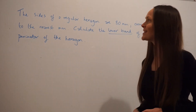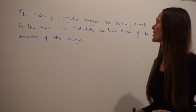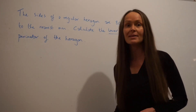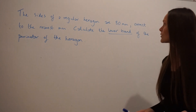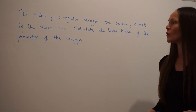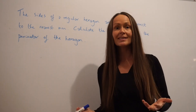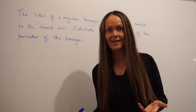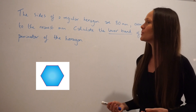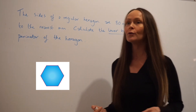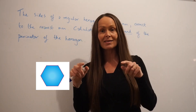In this question it says that the size of a regular hexagon are 80 millimetres correct to the nearest millimetre. Calculate the lower bound of the perimeter of the hexagon. A hexagon is a six-sided shape and a regular hexagon just means that all of the lengths are equal in size.